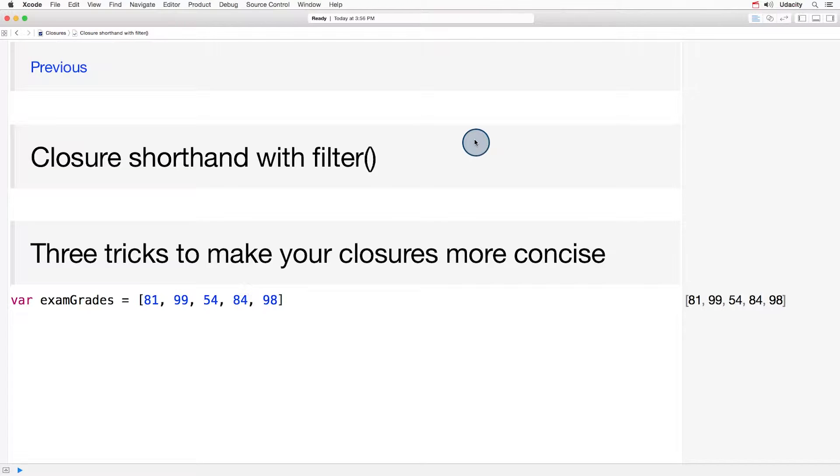There are several syntactical tricks available to make closure expressions super concise. In fact, this is one of the coolest aspects of closure expressions in Swift. And at times, one of the most confounding.